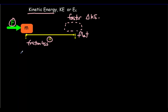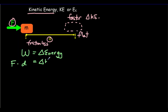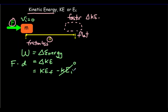With all these proofs, we start with work equals the change in energy. The work is equal to force times distance, and the only energy change here will be in kinetic energy — the final kinetic energy minus the initial kinetic energy. Let's take our initial speed to be zero, so there's no initial kinetic energy. Our final speed we'll call V. So the final kinetic energy equals force times distance.